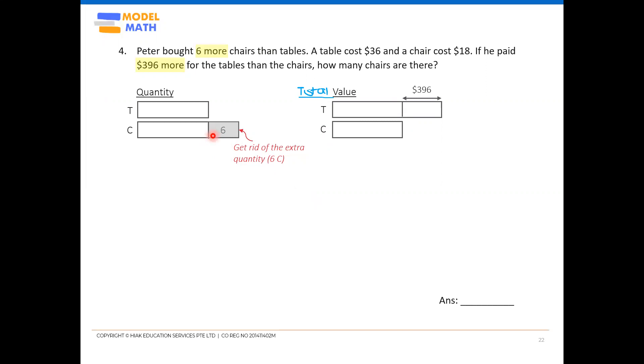Okay, now since we have removed the six chairs from the quantity side, you have to be fair to the value model as well. The value of these six chairs naturally will have to disappear from this side also. Okay, but of course, I need to find out what's the value that must disappear. And that is why my first step is to calculate this value of six chairs. All right, which will be six times $18.